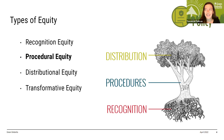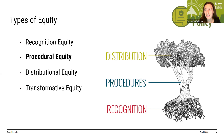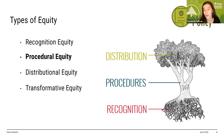Last but not least is transformative equity — addressing the structural conditions while facilitating repair, cultivating accountability, and reducing harm. I like to think of this as asking how are we shifting the culture around doing this work. Building on the tree image: what does the forest look like? How are we interacting with other trees?